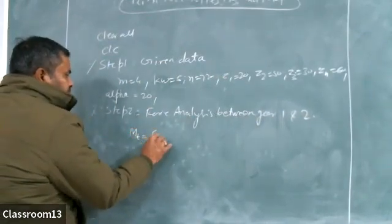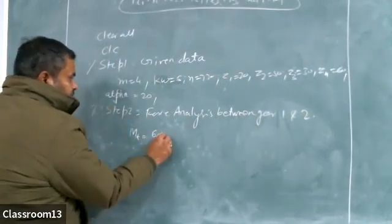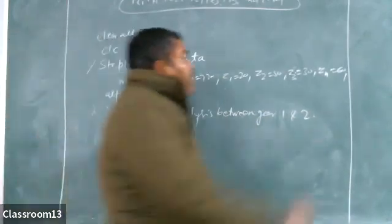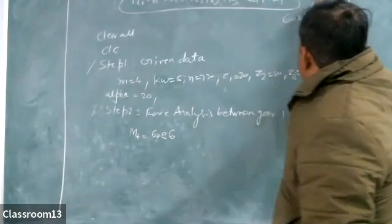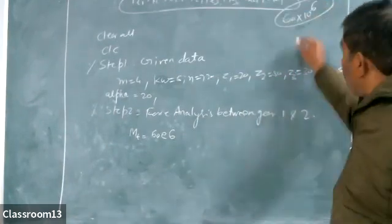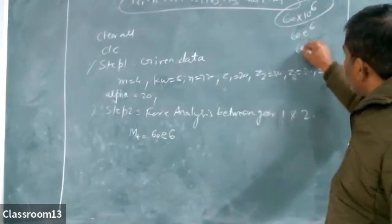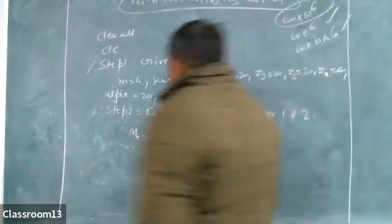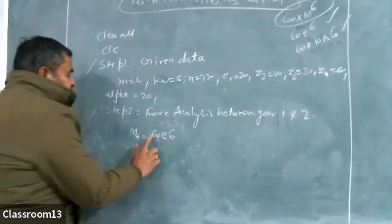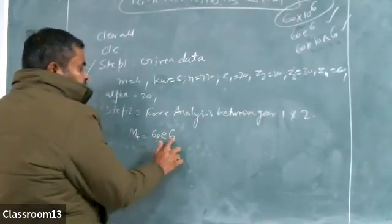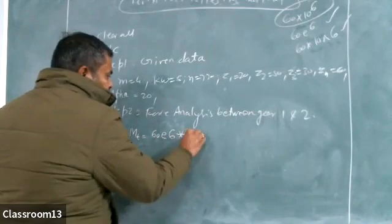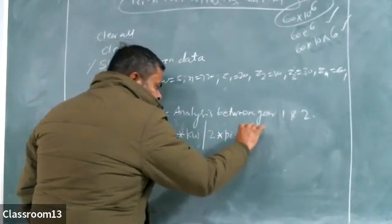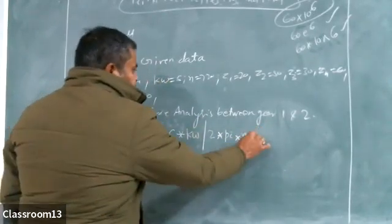Pt4 is given by 60 × 10^6. So 10 to the power 6 can be written as 60E6. Both 60E6 and 60 × 10^6 are correct; 60E6 is much better. So I am writing 60E6 multiplied by kilowatt, divided by 2π, multiplied by N1. Put a semicolon here.